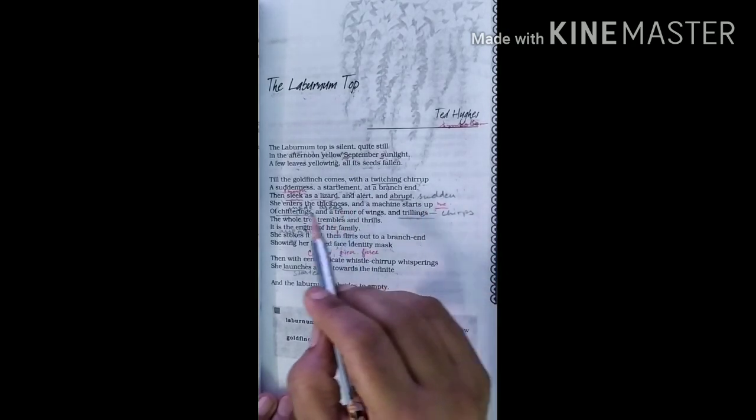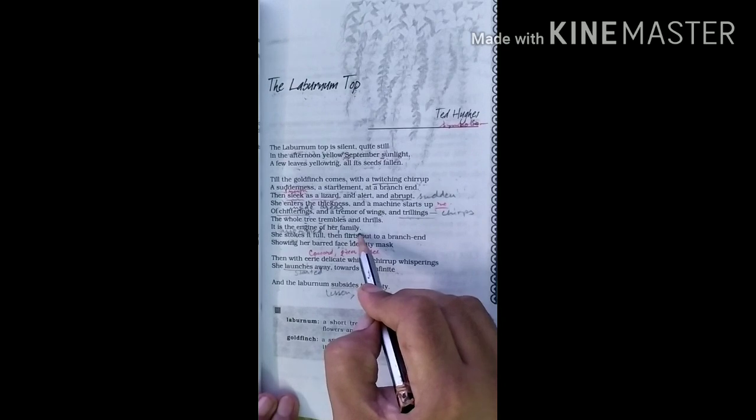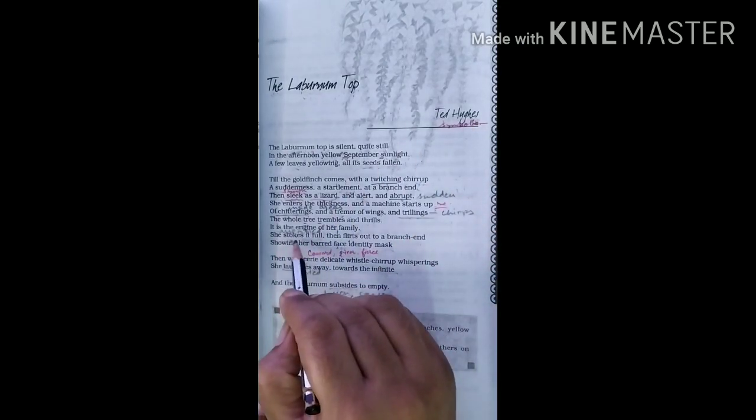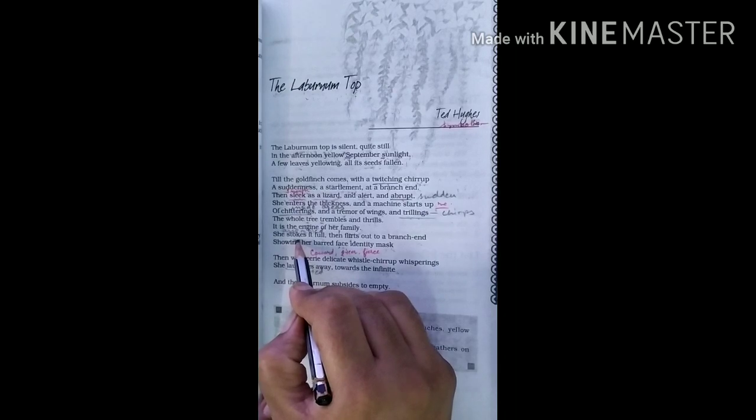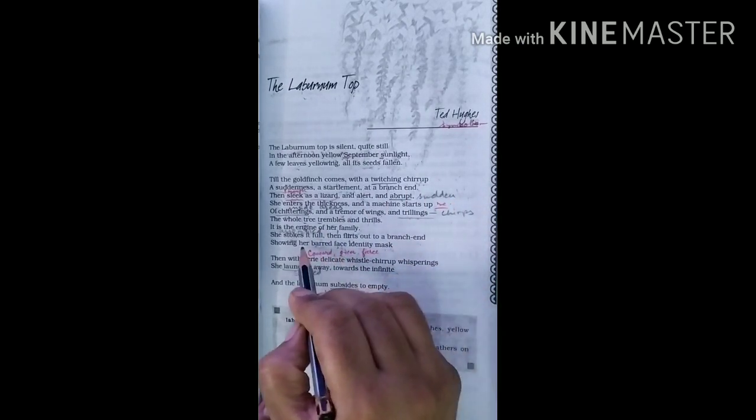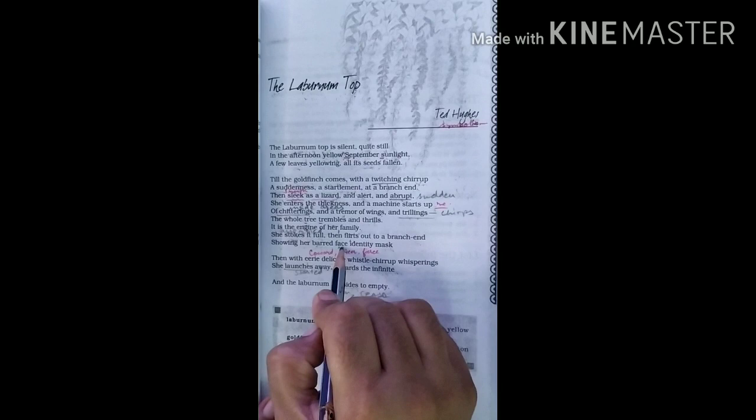Similarly, when the young birds see their mother, they start chirping like a machine, fluttering their wings fastly in joy as their mother has come with food. They were hungry as well as sad being far from their mother. Now the whole tree trembles and thrills because of the mother bird and her young ones. The poet probably wants us to feel how a dead-like tree becomes alive because it has given space to the bird and her young ones. The birds have gotten shelter and the tree in return has got life. The goldfinch is thus the engine of her family. It is written, it is the engine of her family, which includes the Laburnum tree as well.